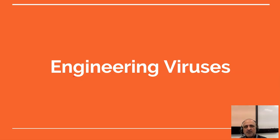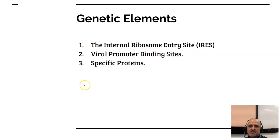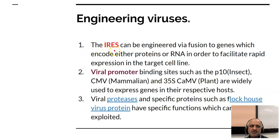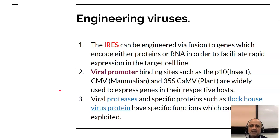Let us now look beyond viruses to genetic engineering of viruses. The genetic elements of viruses — such as internal ribosome entry sites, viral promoter binding sites, and specific proteins — are versatile elements which can be engineered by fusion to other genes for the expression of genes. The internal ribosome entry site can be engineered by fusion to other genes to facilitate transcription and translation of proteins. Viral promoters such as the P10 insect promoter, the cytomegalovirus mammalian promoter, and the 35S cauliflower mosaic virus promoter are host-specific and generally the tools of choice for engineering proteins for expression in these specific hosts.